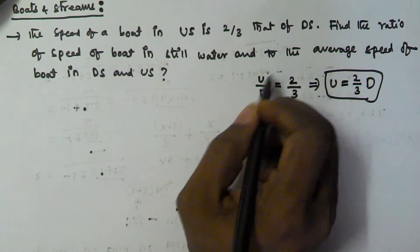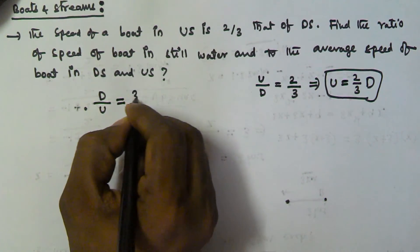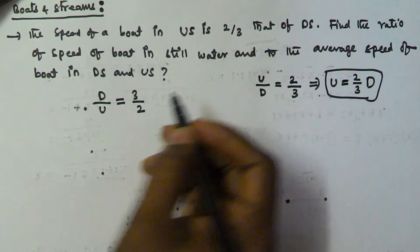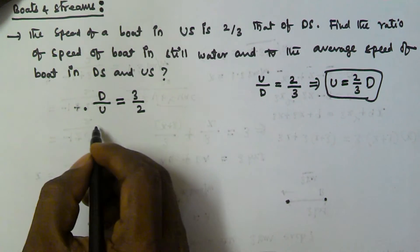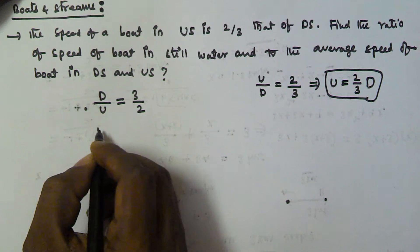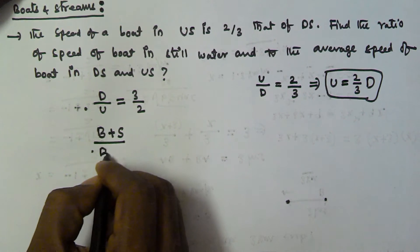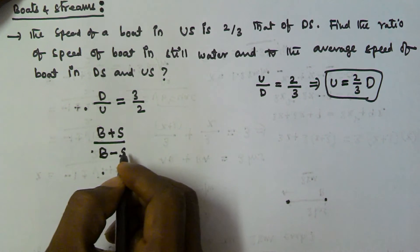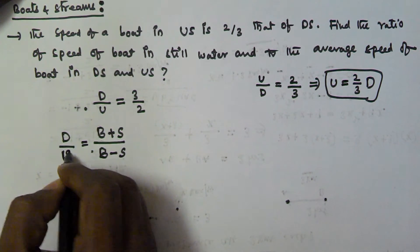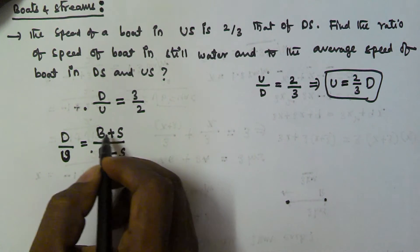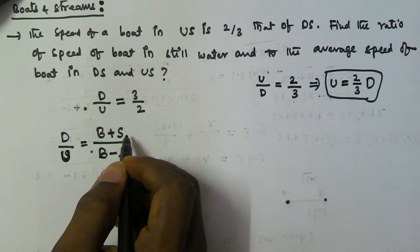Otherwise, downstream by upstream is equal to 3/2. So the downstream speed by upstream speed is equal to 3/2. Now, downstream speed divided by upstream speed equals (B + S) divided by (B − S), where B is the speed of the boat in still water and S is the speed of the stream or current.